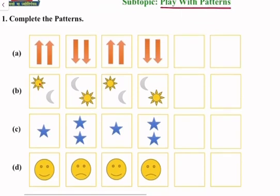For pattern A, it will be this and this. In pattern B, we can see in the first box there is a sun and a moon, then moon, sun, sun and moon, moon, sun. So our pattern will be moon.